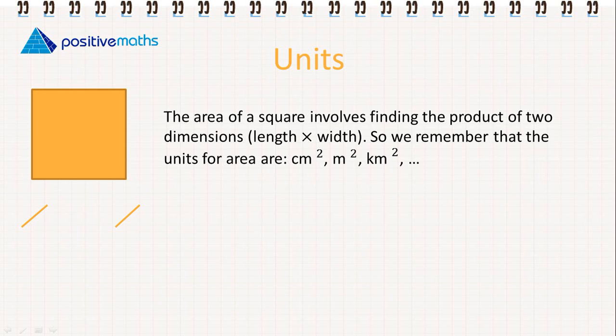So let's go through the units that we need. The area of a square involves finding the product of two dimensions, length by width. So we remember that the units for area are cm², m², km² and so on.